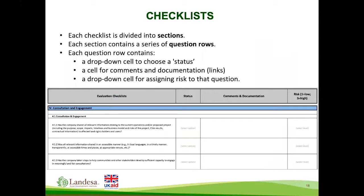Each checklist is a series of questions that the user will answer to carry out the assessment. These checklists are divided into sections, each containing a series of question rows. In each question row there will be a drop-down cell in which the user will choose a status — their assessment of how completely or adequately the company has addressed the issue in question. The question row also contains a cell for the user to enter comments and documentation relevant to the question, and a risk cell in which the user will assign a risk rating to the company's completion status for that question.